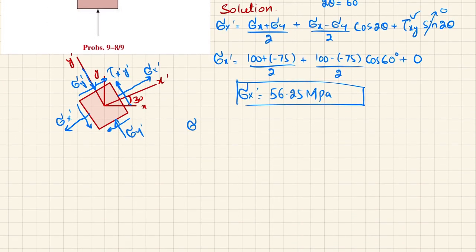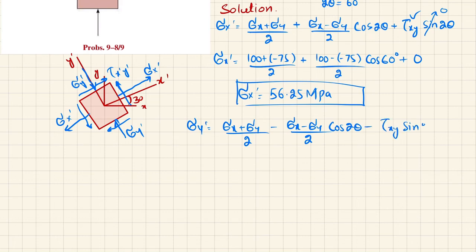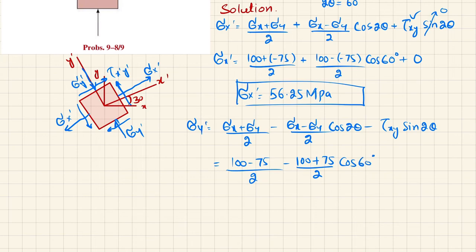Now for sigma y dash: it equals (sigma x plus sigma y)/2 minus (sigma x minus sigma y)/2 times cos 2θ, minus tau xy times sin 2θ. Substituting: (100 + (−75))/2 − (100 − (−75))/2 × cos 60°, and the tau xy term is again 0. So sigma y dash equals minus 31.25 MPa.